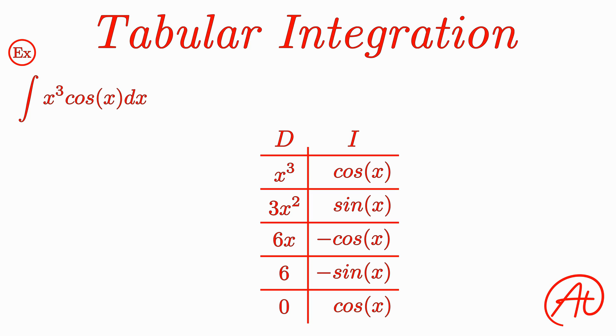Now all that's left is to multiply diagonally down this table with alternating signs. So our first term becomes x cubed times sine of x. For the second term, the negative sign cancels with the negative sign from our integral to give us a positive 3x squared times cosine of x, then minus 6x times sine of x, and finally minus 6 times cosine of x plus c.